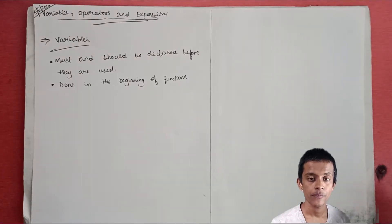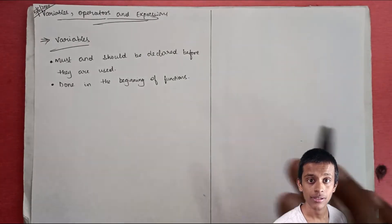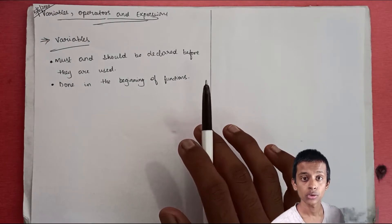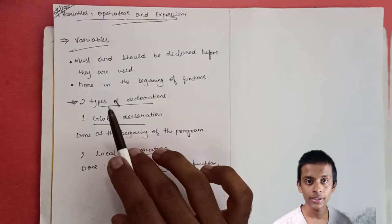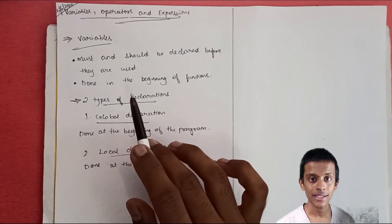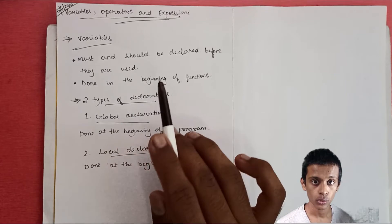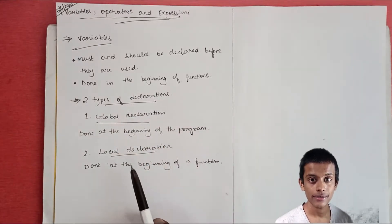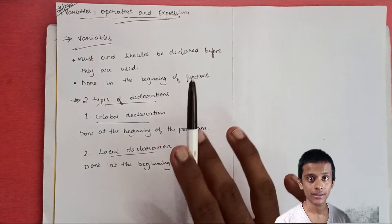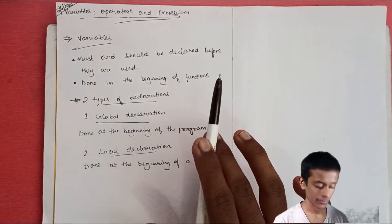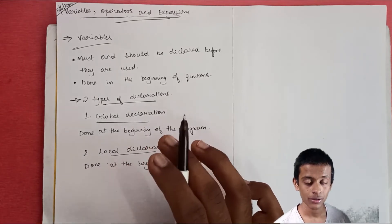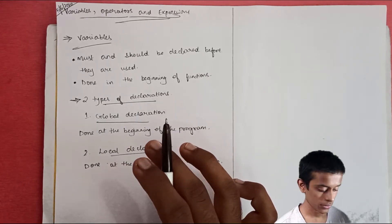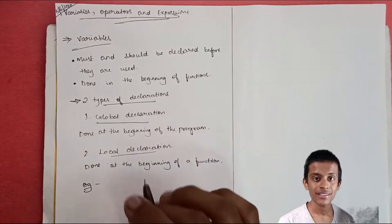There are two types of declarations: global declaration and local declaration. Global declaration is done at the beginning of a program, and local declaration is done locally at the beginning of the function. Let's look at an example to clear your doubt.